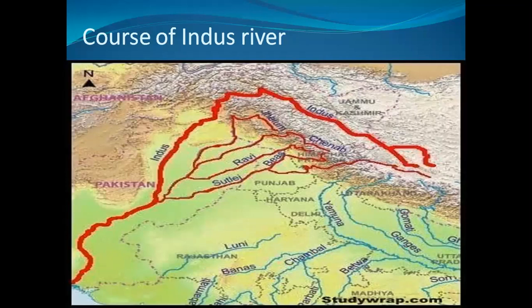In Punjab area, there are five tributaries of the Indus river: Satlaj, Ravi, Beas, Jhelam and Chenab. There are five tributaries of the Indus river that are in Punjab.